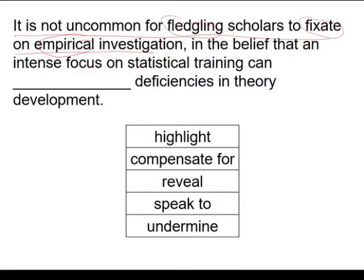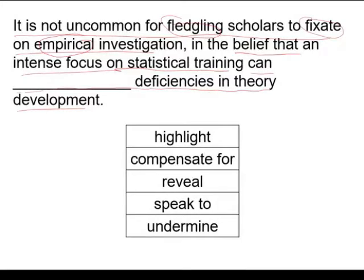But why? Well, the next clause tells us. Fledgling scholars believe that an intense focus on statistical training — techniques for gathering hard data — can blank deficiencies in theory development. Theory development is the process of trying to explain why things happen, and the word deficiencies means there are shortcomings or problems with the explanations developed by our novice scholars.